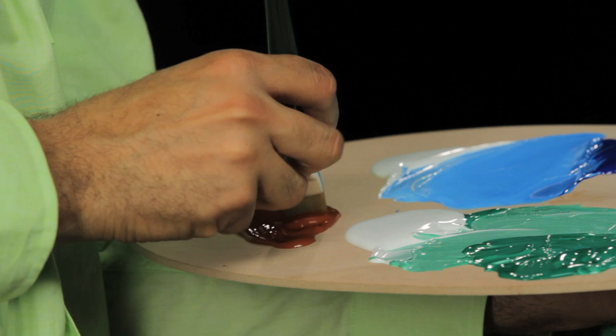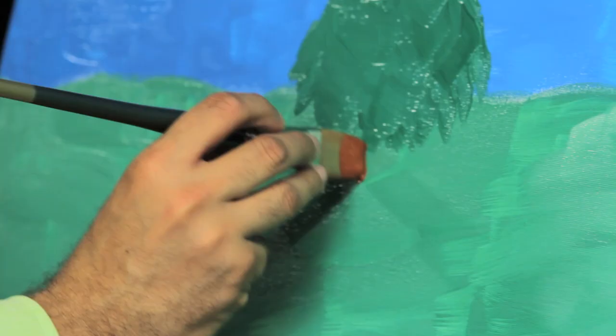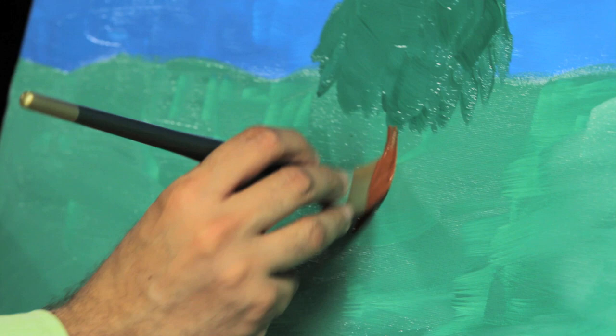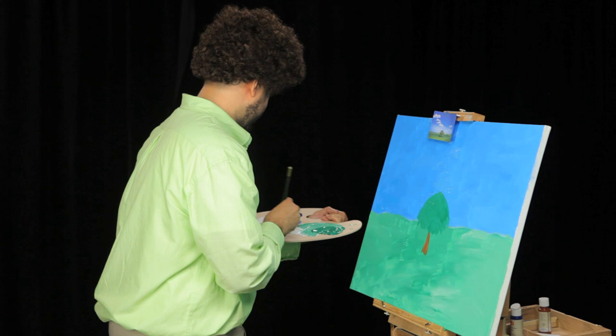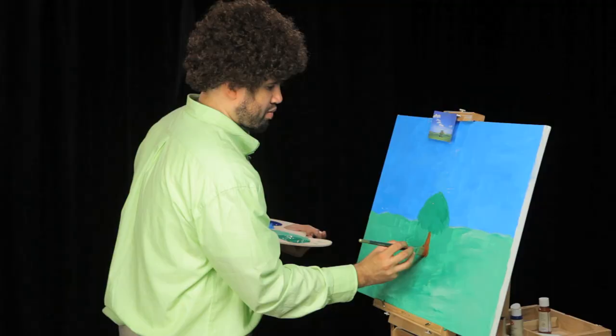There we go. Get that brown in there for the tree. I'm not too picky on what kind of brown this is. I don't even know. Just, there we go. Look at that. Add some more. That brown's a little bit runny. There we go. Real expressive.